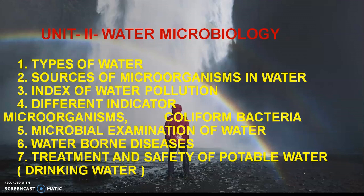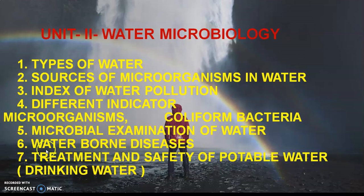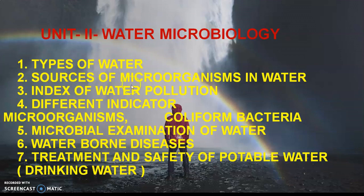In this second unit, we will cover a total of 7 points. The first point is types of water, then sources of microorganisms in water, then the index of water pollution, next different indicator microorganisms and coliform bacteria, then microbiological examination of water, then waterborne diseases, and finally treatment and safety of potable water, that is drinking water. Today we will cover the first two points: types of water and sources of microorganisms in water.